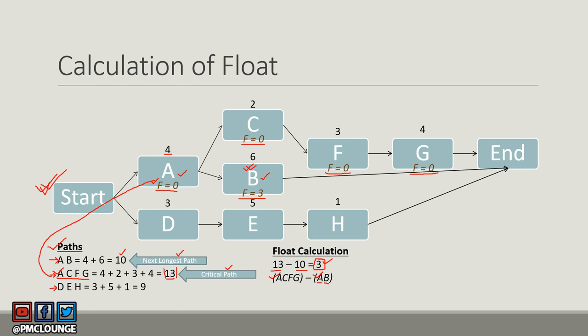Now let's calculate the float for the last path, DEH. Using the same approach — critical path minus path value: 13 minus 9 equals 4. So the float for activities D, E, and H is 4. This is now reflected in the diagram.